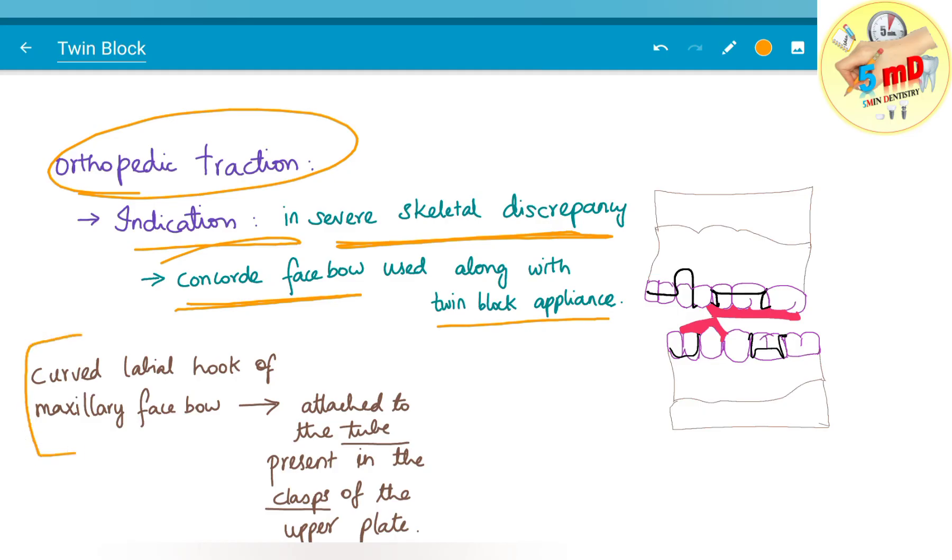The curved labial hook of the maxillary face bow is attached to the tube as I mentioned before. The tube present in the clasps of the upper plate is used for the attachment of the labial hook of the maxillary face bow.